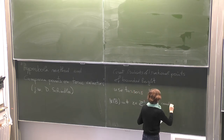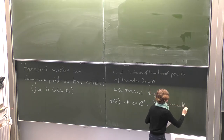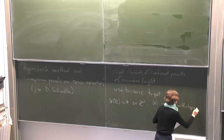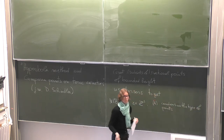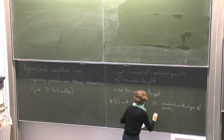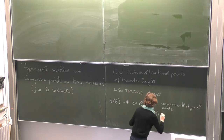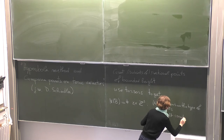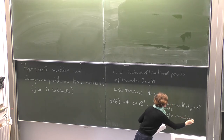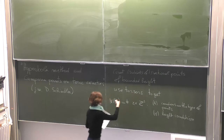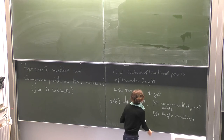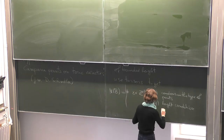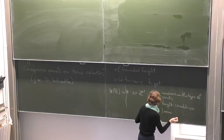Condition A refers to conditions on the type of points — all conditions except for the height. And condition H is the height condition. Because I use torsors to parametrize my points, for me the height condition looks like some absolute values of monomials bounded by the bound B.